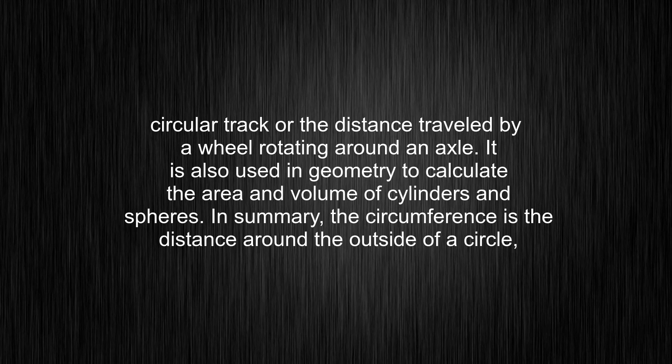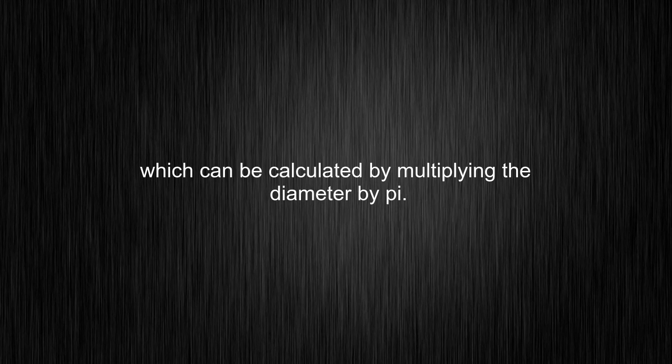In summary, the circumference is the distance around the outside of a circle, which can be calculated by multiplying the diameter by pi.